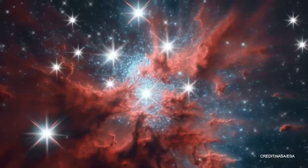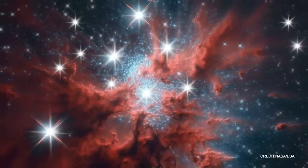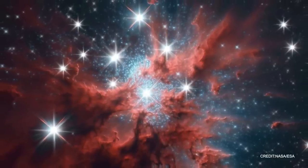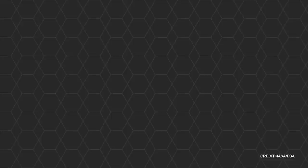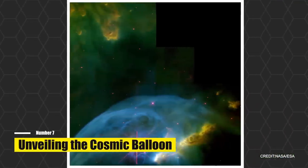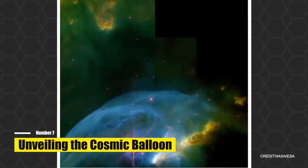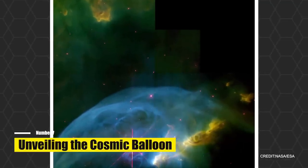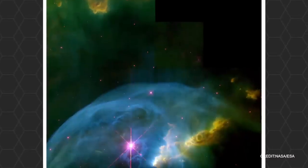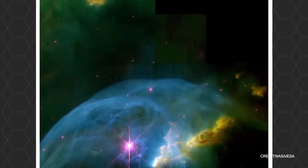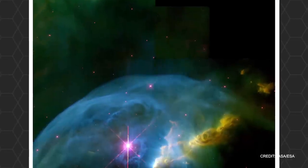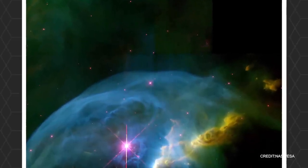Number seven, unveiling the cosmic balloon, the intricate beauty of the Bubble Nebula. In the grand theater of the cosmos, the Bubble Nebula, also known as NGC 7635, presents a spectacular act. This ethereal formation, lying approximately 8,000 light years away in the constellation Cassiopeia, was recently imaged by astronomers.